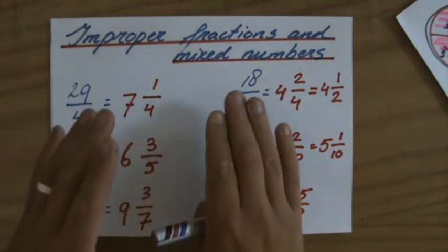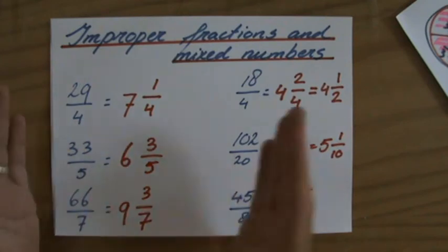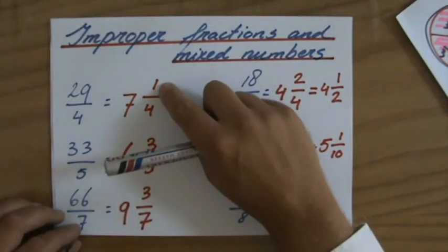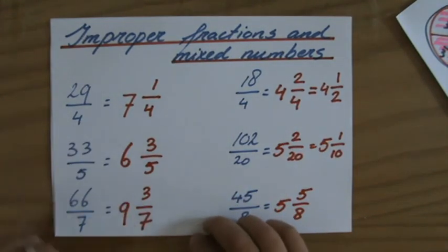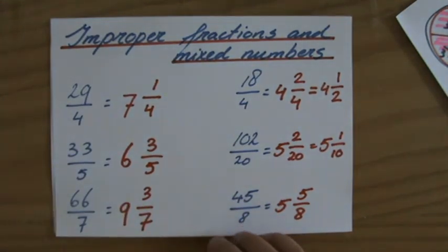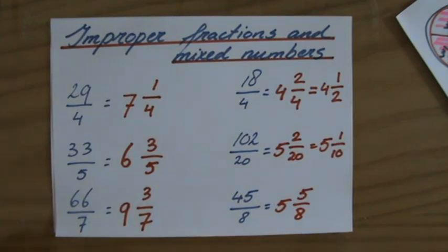So improper fractions, or top-heavy fractions, to mixed numbers—it's nothing more than a division. You check the remainder, which you then still have to divide by the denominator. Let's turn it around for the next video, where I'm going to give you mixed numbers and you're going to find the improper fraction belonging to that number. I'll see you then.